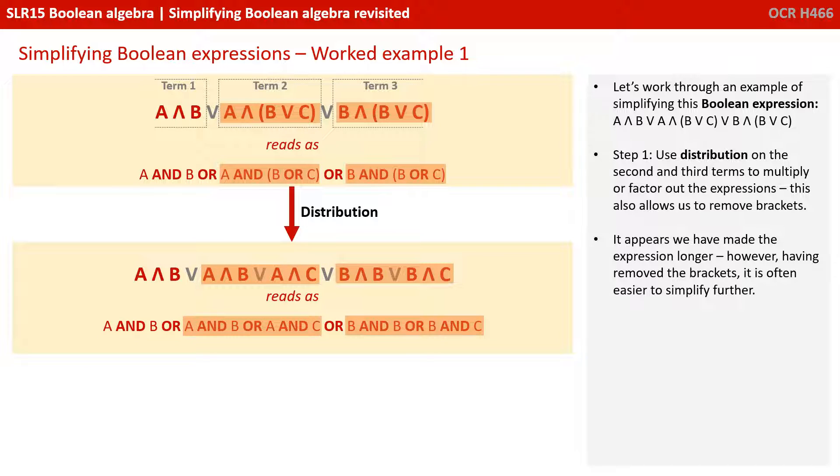Step one: We're going to use distribution on the second and third terms to multiply or factor out the expression. This allows us to remove the bracket. Now it appears we've made the expression longer. However, having removed the brackets it's often easier to simplify further.